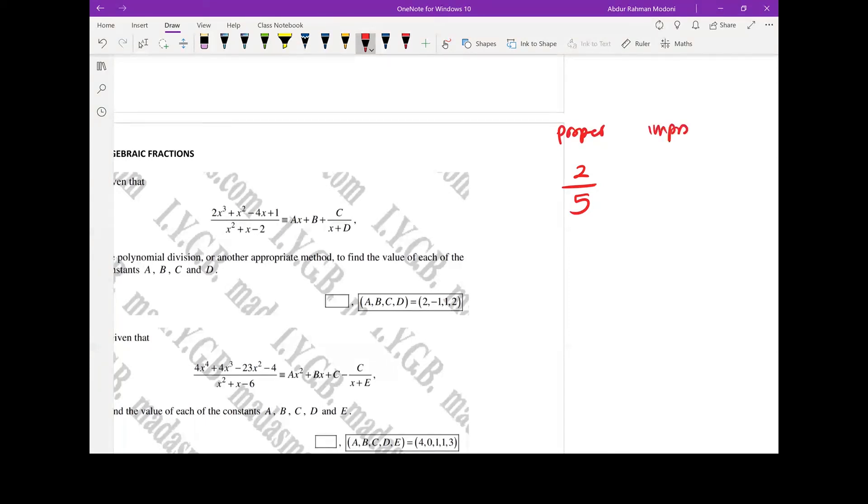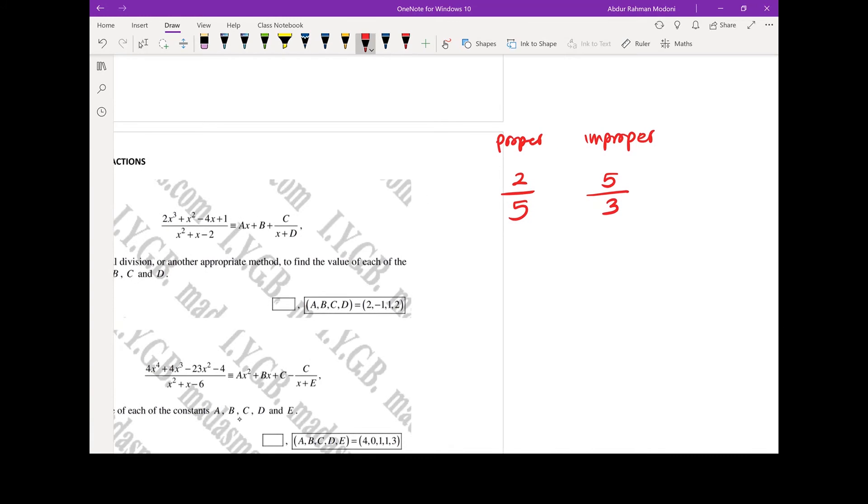Improper is where the denominator is smaller than the numerator, so improper fractions can be written as - okay, how many times does three go into five? It goes in once plus a remainder of two, so there's two-thirds remaining. So it can be written as one plus two-thirds, which often gets written as one and two-thirds.